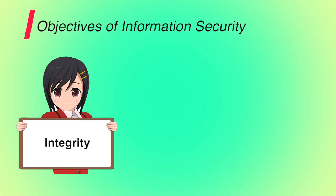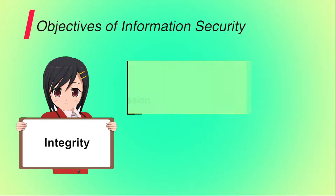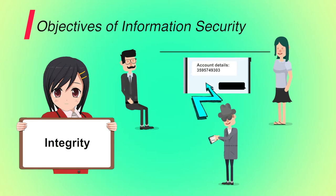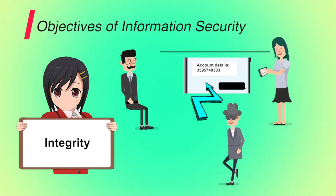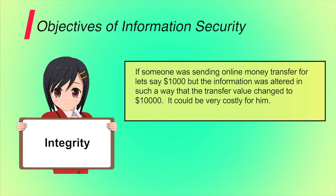Second is integrity. It involves protection against improper information modification or destruction. A loss of integrity is the unauthorized modification or destruction of information. For example, suppose you are sending your account number to your friend to transfer money. If an attacker modifies the account number and places his account number in place of yours, then the integrity of the message breaks. Also, if someone was sending an online money transfer for $1,000, but the information was altered so the transfer value changed to $10,000, it could be very costly. So the integrity of the message should be maintained for secure transmission.